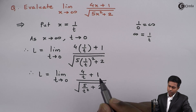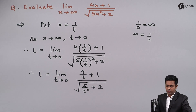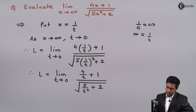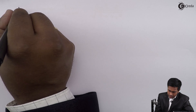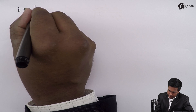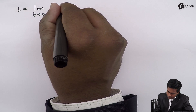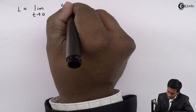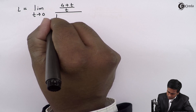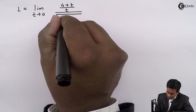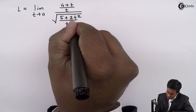After taking the LCM in the numerator as well as in the denominator, we get L equals the limit as t tends to 0 of (4 + t)/t, all divided by the square root of (5 + 2t²)/t².